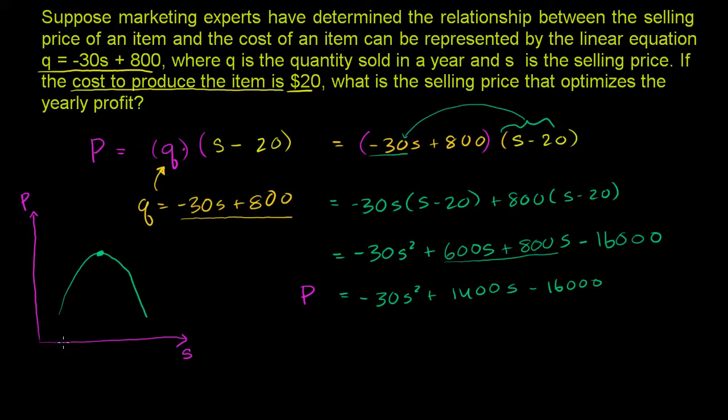You could do it with calculus, if you had calculus at your fingertips. Or you could just recognize this is the vertex of the parabola. And you could figure out the vertex by putting it in vertex form. But the fastest way is to just know that normally the x coordinate, or the s coordinate, the s coordinate of the vertex is going to be negative b over 2a.